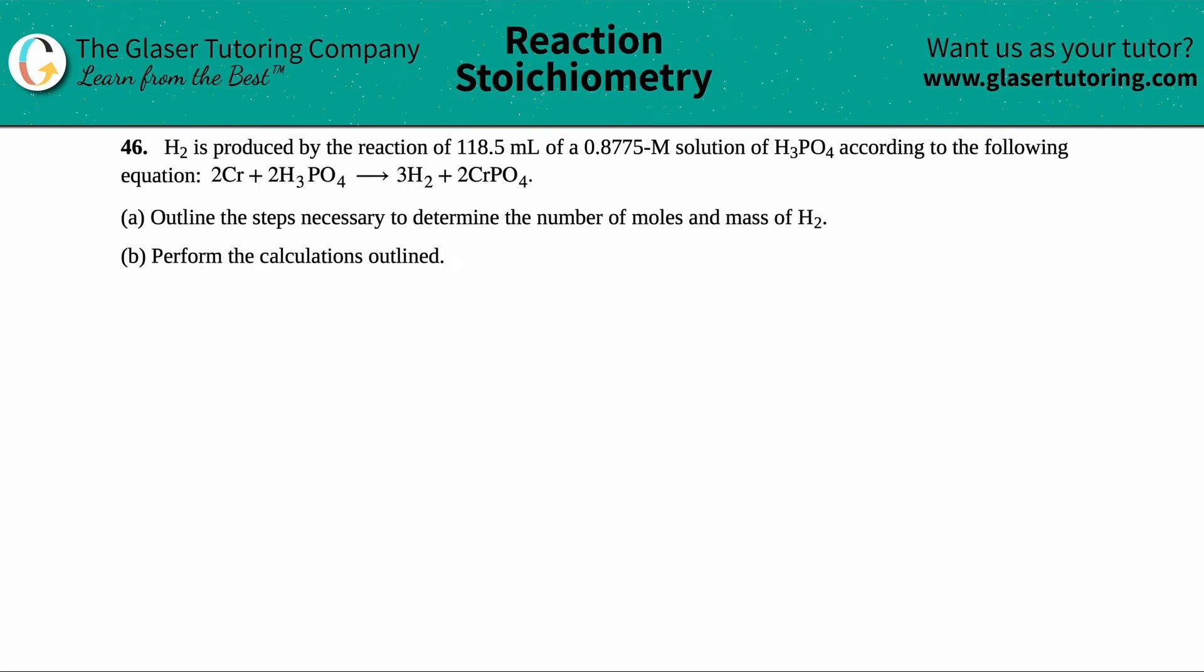Number 46. H2 is produced by the reaction of 118.5 milliliters of a 0.875 molarity solution of H3PO4, phosphoric acid, according to the following equation. And then letter A, it says outline the steps necessary to determine the number of moles and mass of H2.